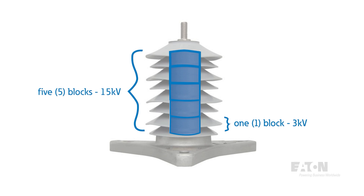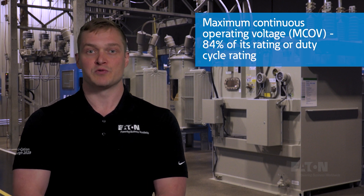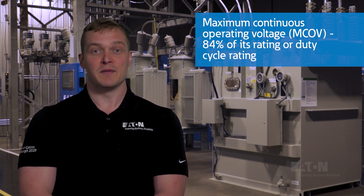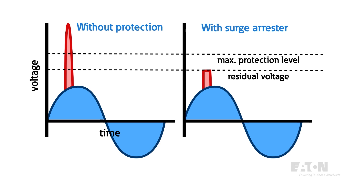In order to properly select an arrestor, utility engineers will reference its Maximum Continuous Operating Voltage, or MCOV, which represents the voltage at which the arrestor begins to conduct. The MCOV is about 84% of the arrestor's voltage rating. Aside from MCOV rating, there are also other considerations when sizing an arrestor — for instance, its discharge voltage rating. This value tells you the arrestor's let-through voltage, or residual voltage, when it operates. This is important to consider because the equipment installed in parallel will also experience this voltage rise.